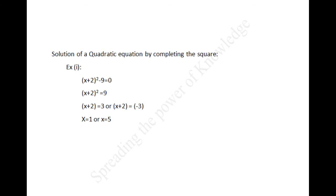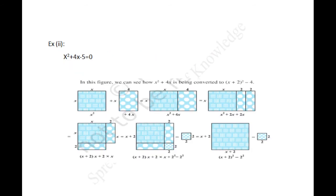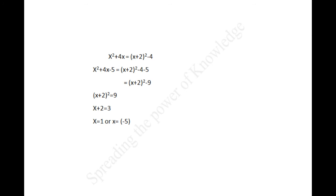In this example, x is completely inside a square and we found the root easily by taking the square root. Consider another example: x squared plus 4x minus 5 equal to 0. To solve this, we convert the quadratic equation into the form (x plus A) whole square minus B squared equal to 0. From the figure, x squared plus 4x equals (x plus 2) whole square minus 4. Therefore, x squared plus 4x minus 5 equals (x plus 2) whole square minus 4 minus 5, which equals (x plus 2) whole square minus 9 equal to 0, giving x equal to 1 or minus 5.